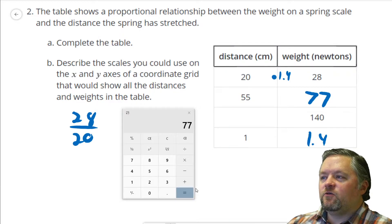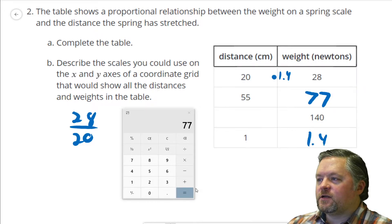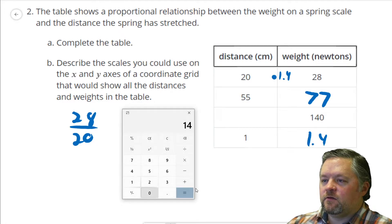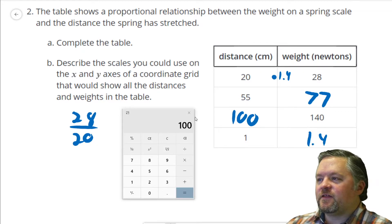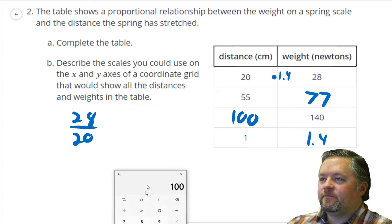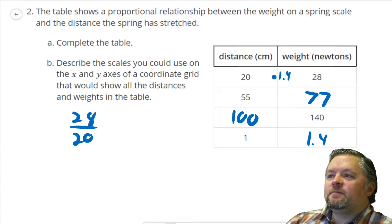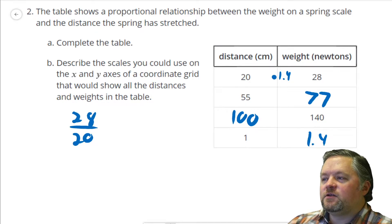55 times 1.4 is 77. 1 times 1.4 is 1.4. Now, let's go backwards. What do we multiply by 1.4 to get 140? How do we figure out what we multiplied by? We divide. That's 100. That was a pretty easy one. We didn't really need the calculator for that.